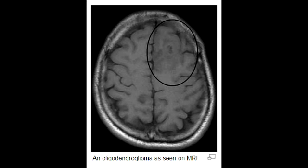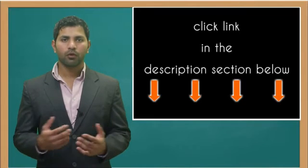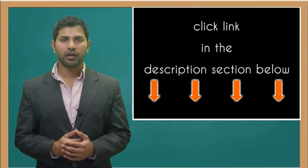What happens to oligodendrocytes in Oligodendroglioma? In Oligodendrogliomas, the oligodendrocytes are usually calcified.